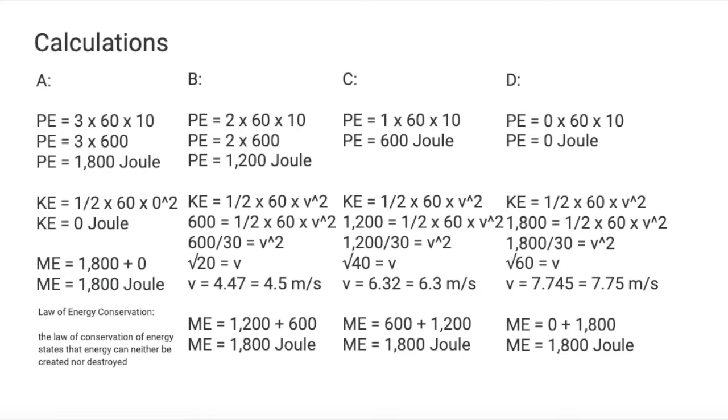But due to the law of energy conservation, which states that energy can neither be created nor destroyed, the mechanical energy for all points from A to D is the same, but the proportion between the kinetic and the potential energy can differ. For example, in point A, the potential energy is 1,800 and the kinetic energy is 0, but in point B, the potential energy is 1,200 and the kinetic energy is 600 joules. Even though the proportions are different, the result of the mechanical energy would stay the same. In this case, it's 1,800.